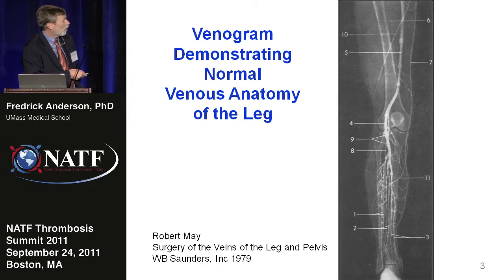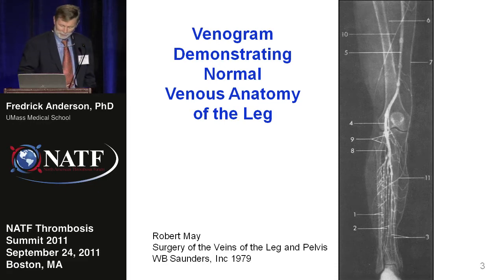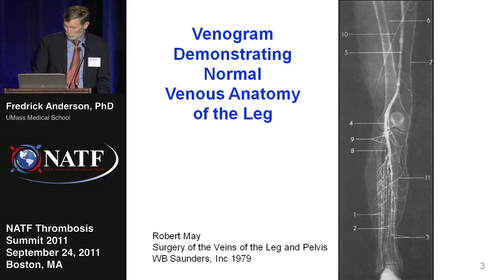Here on the surface you can see the superficial venous system, which are the veins that many of us can see on our legs, particularly when we exercise, and these communicate through little perforating veins. So that's the normal view of the venous system of the leg, where deep vein thrombosis commonly forms.